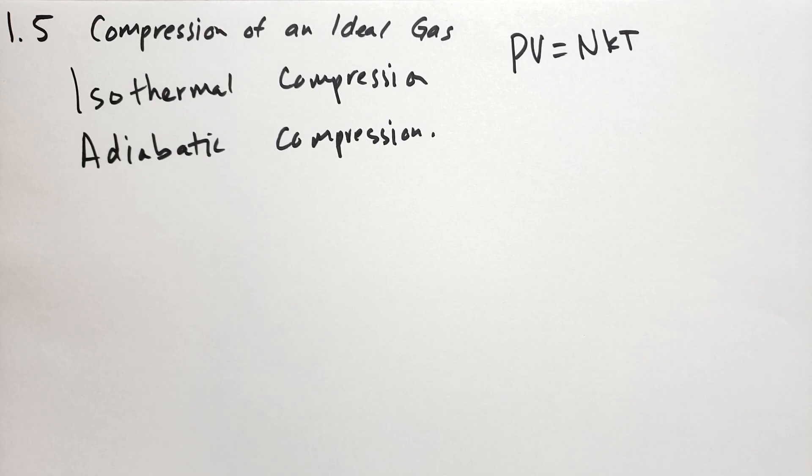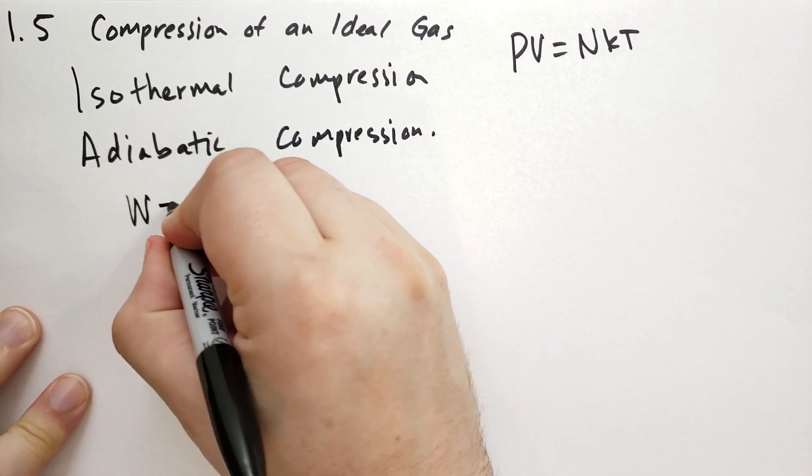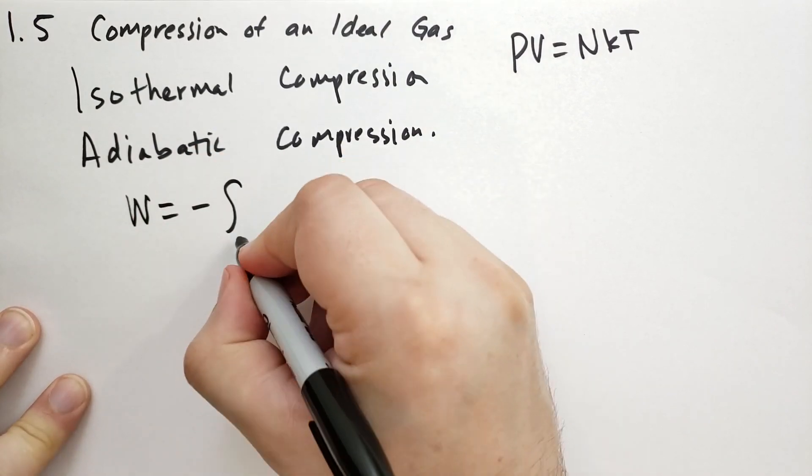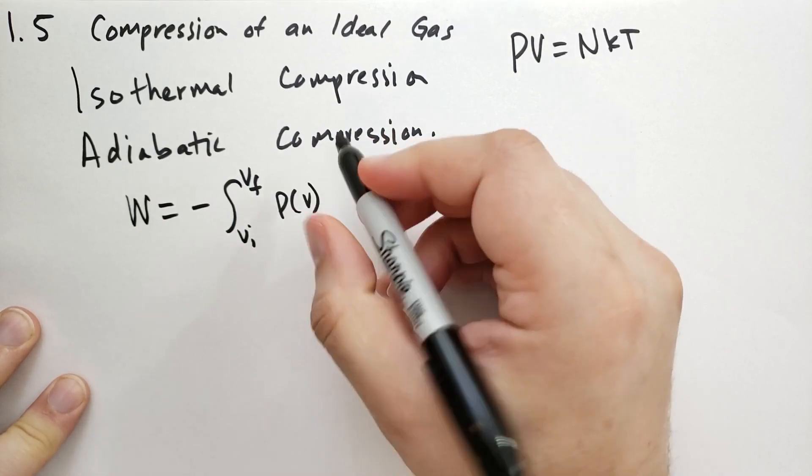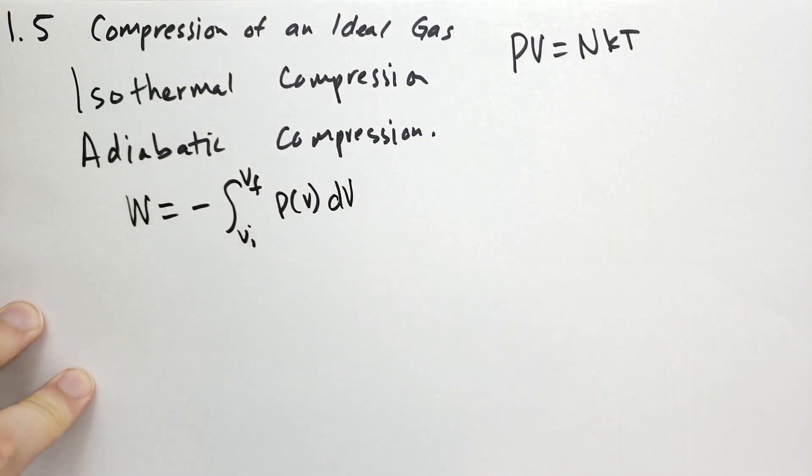When you go to compress an ideal gas isothermally, then you can maintain the temperature is constant. Because it's so slow, it obviously keeps the quasi-static condition true, and so we can use formula 1.29 to describe the process, which is that the work is equal to minus the integral from the initial volume to the final volume of the pressure as it relates to V, dV.